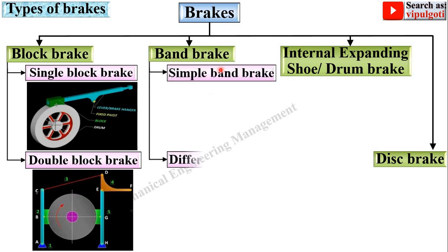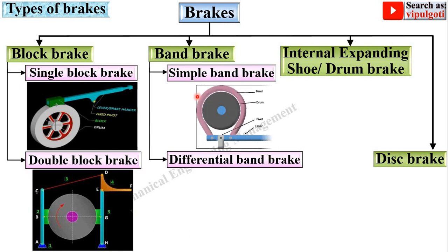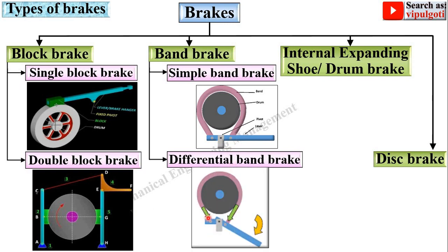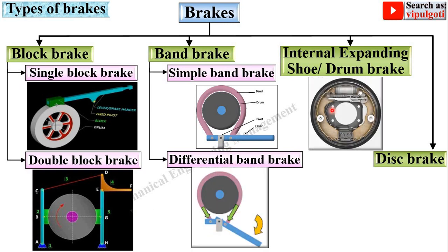Band brake is also classified into two groups: simple band brake and differential band brake. Internal expanding shoe brake is also known as drum brake. Here you can see the shoes that are expanded when the brake is applied, and a drum is used — that's why it is called the drum brake.